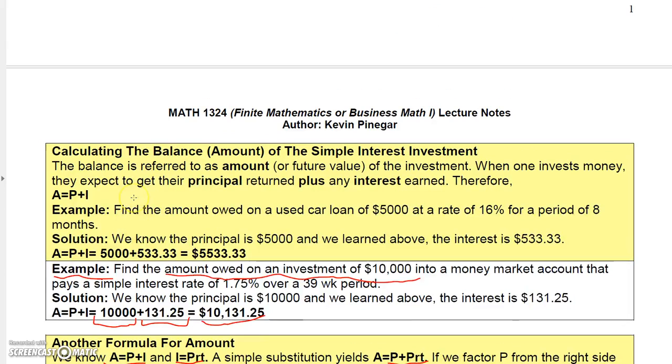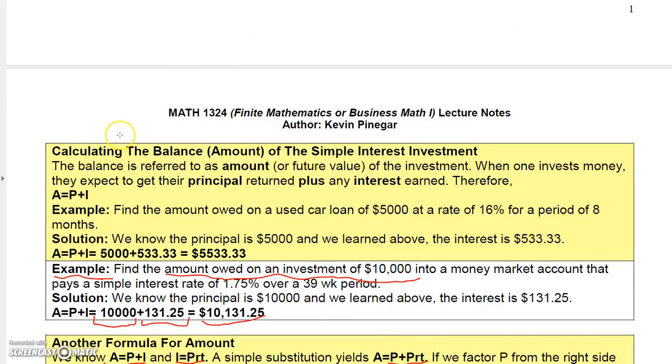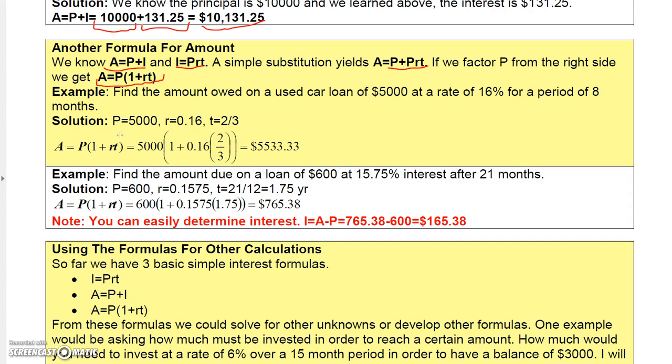So let's return to our car loan that we did the very first problem. Instead of asking for the interest, suppose we had asked for the amount that we would have to pay. Well, the amount we would have to pay at the end of that, we could actually just use this formula, principal times 1 plus RT. And then all we have to do is put in the principal, $5,000, and then make sure you put 1 plus RT in parentheses here.